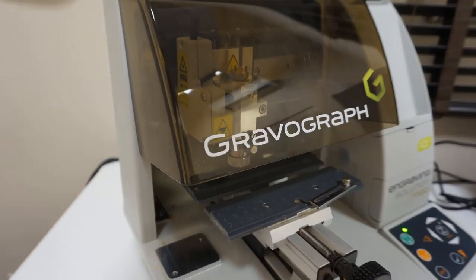The Gravograph machine is an engraving business machine, so it has a lot of functionality and applications. To engrave the name badges is only scratching the surface of what can be achieved.